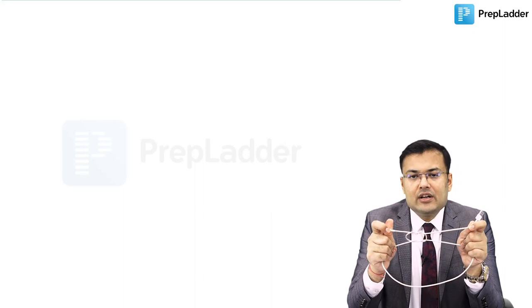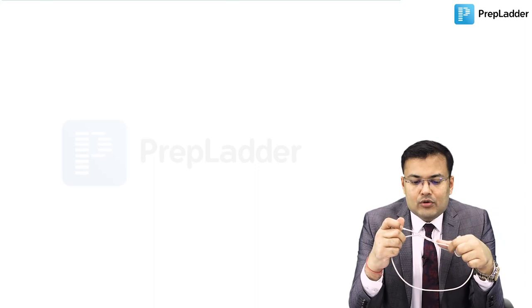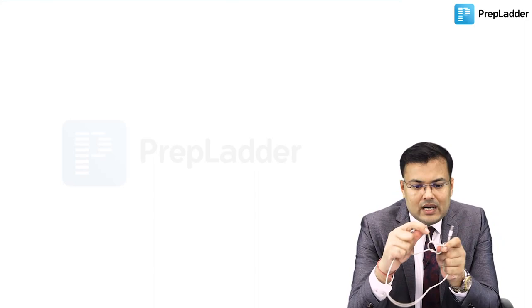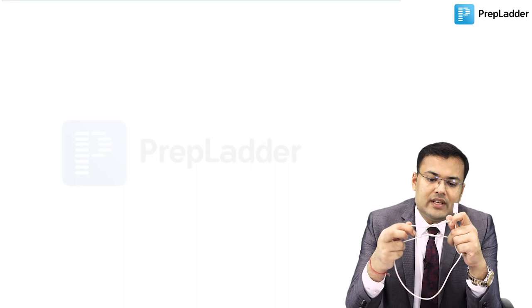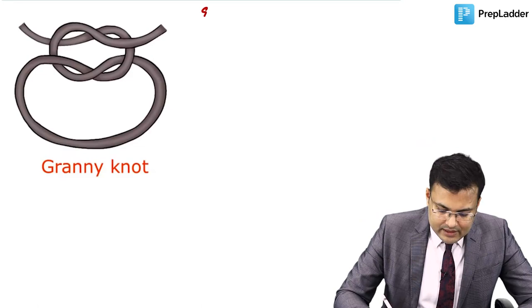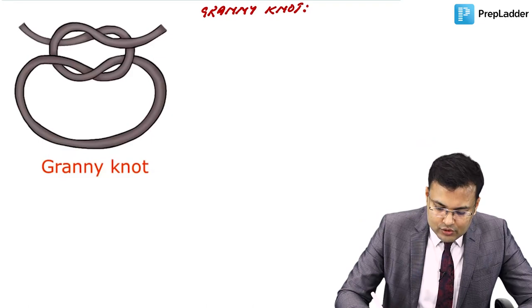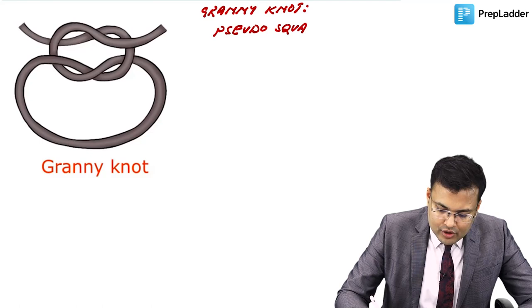Granny knot (pseudo square knot) identification: one end of each color is above and one is below — ends are NOT together. This distinguishes it from the reef/square knot where ends are always together. The granny knot is relatively unstable. Now we will discuss the needle.